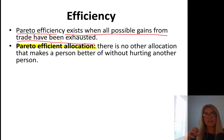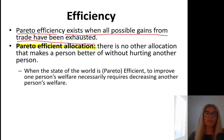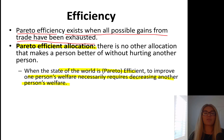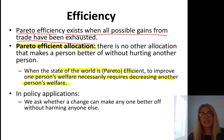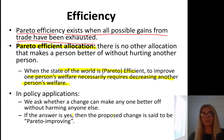What if I took his oranges and took somebody's only candy bag and gave it to him — you are basically hurting that other person. So when the state of the world is Pareto efficient, to improve one person's welfare necessarily requires decreasing another person's welfare. It becomes a zero-sum game. In policy applications, we ask whether a change can make one person better off without harming anyone else. If you give me some tax credit and it hurts other citizens, that's not a Pareto improvement. If the answer is yes, then the proposed change is said to be Pareto improving.